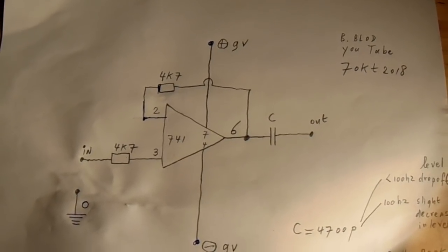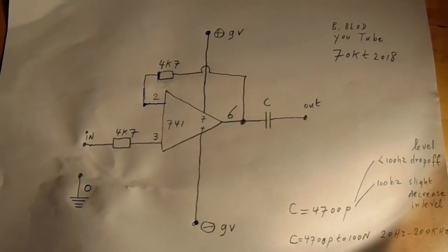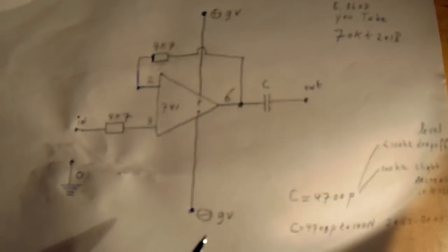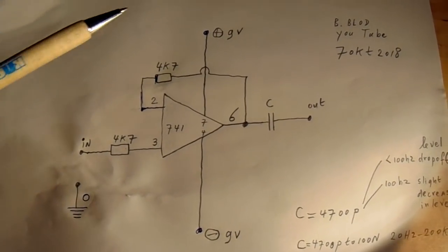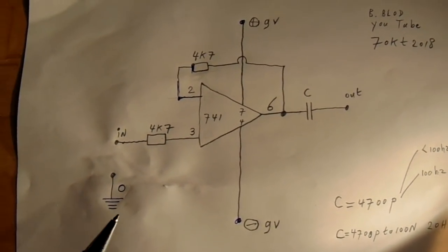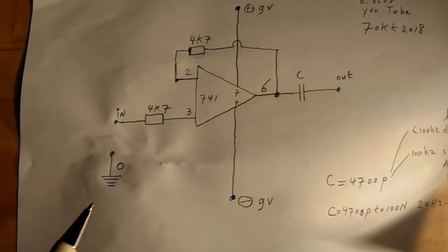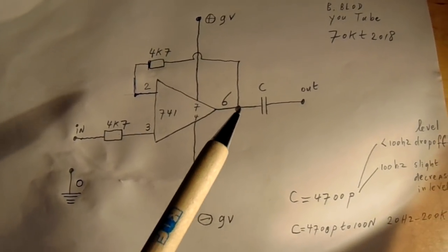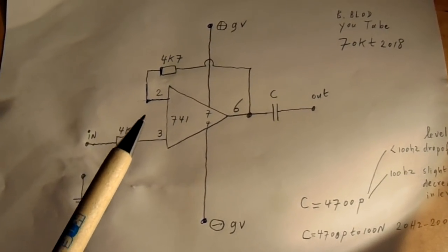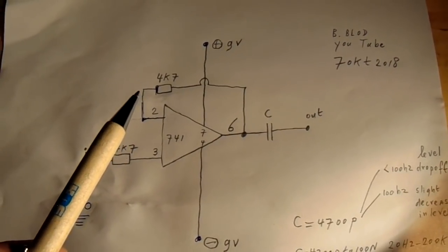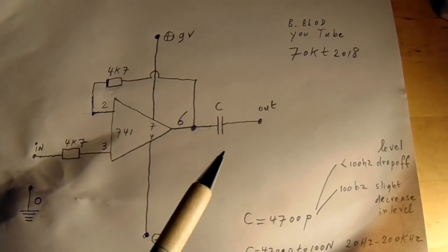Of course, it's a classical 741 operational amplifier: negative here, positive here, input here to ground. This is an important resistor that sets the amplification, and of course the capacitor output.